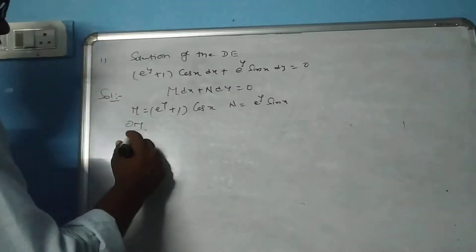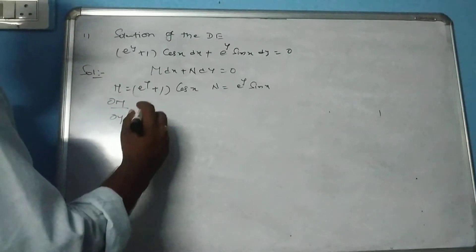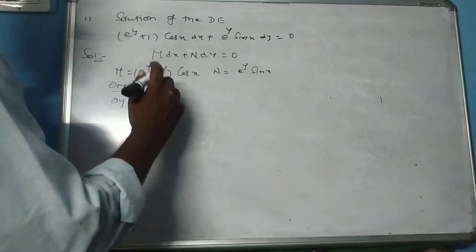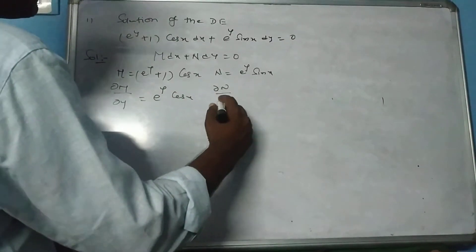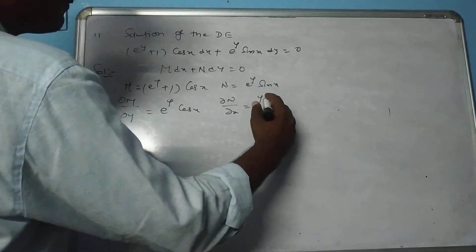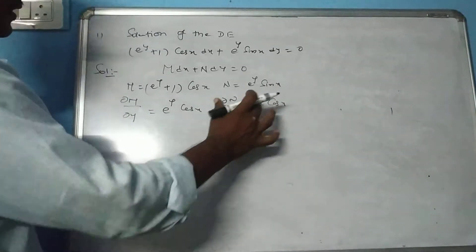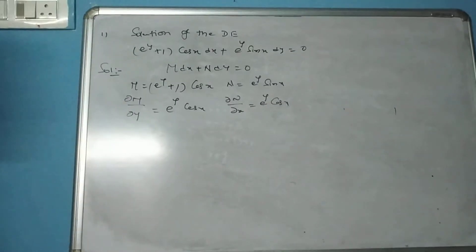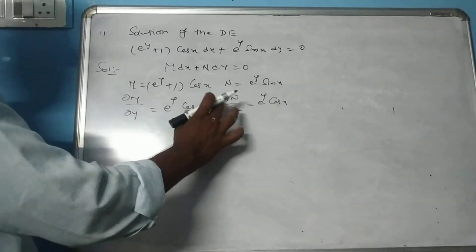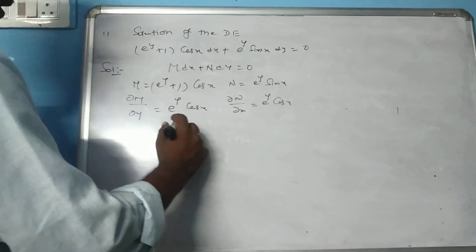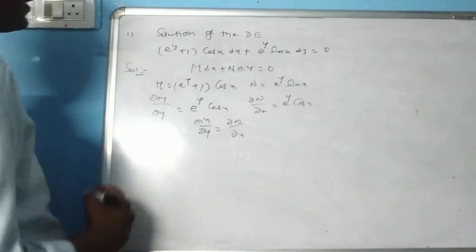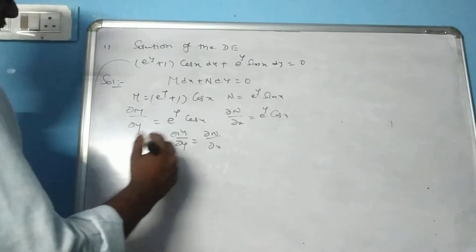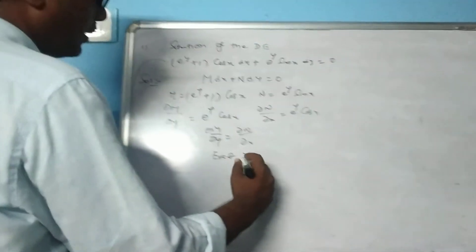Find ∂M/∂y equals e^y cos x, and ∂N/∂x equals e^y cos x. These two are equal; ∂M/∂y equals ∂N/∂x. We observe that this condition is satisfied, therefore this is an exact differential equation.